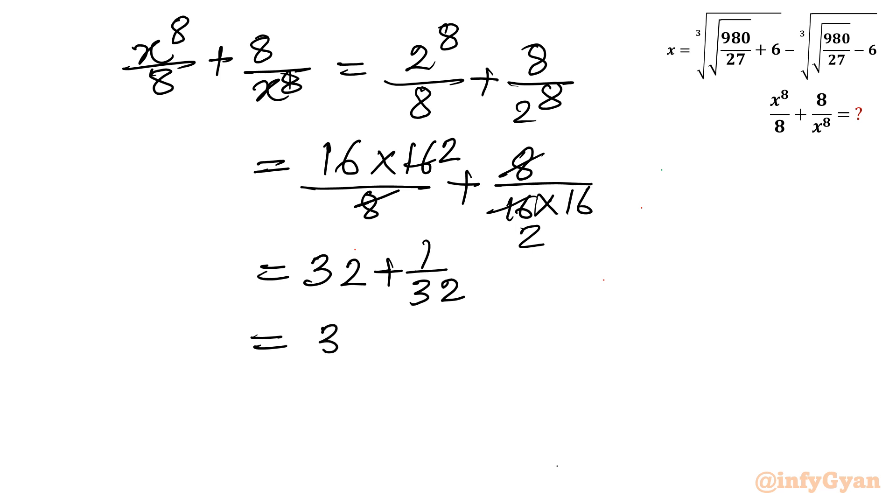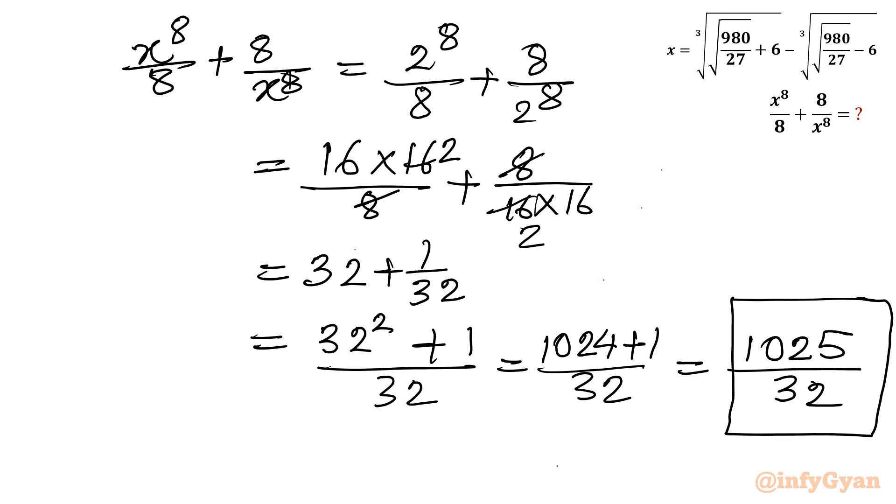Take the LCM. I will write 32 square plus 1 over 32. What is 32 square? 32 square is 1024. So 1024 plus 1 over 32. So our final answer becomes 1025 over 32. This is our expression simplification.